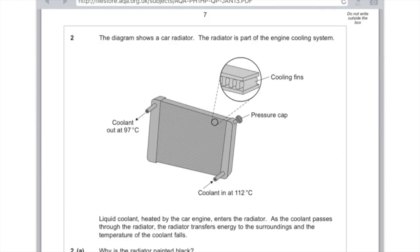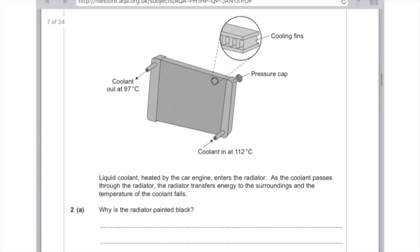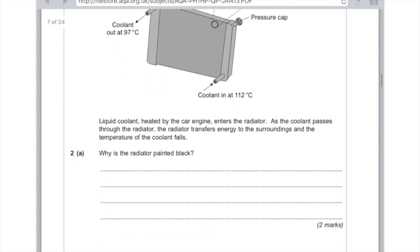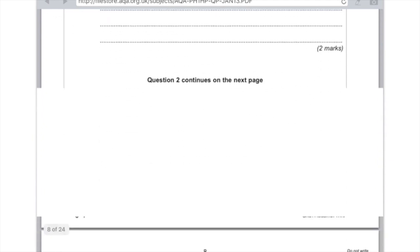Question 2. The diagram shows a car radiator. The radiator is part of the engine cooling system. Liquid coolant heated by the car engine enters the radiator. As the coolant passes through, the radiator transfers energy to the surroundings and the temperature of the coolant falls. Why is the radiator painted black? Because black is a good emitter of infrared radiation and gives the maximum rate of energy transfer to the surroundings.